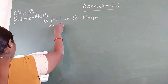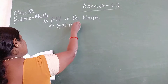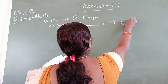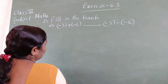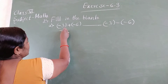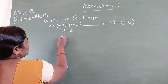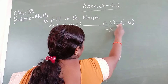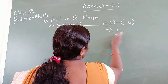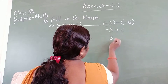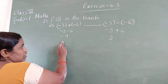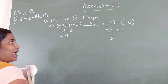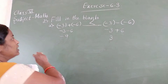First, part A: minus 3 plus minus 6, dash, minus 3 minus minus 6. Simplify to find the answer. Minus 3 plus minus 6 — both are negative, so add: answer is minus 9. Then minus 3 minus minus 6 gives minus 3 plus 6, which is 3. Always positive integers are greater than negative integers, so 3 is greater than minus 9.